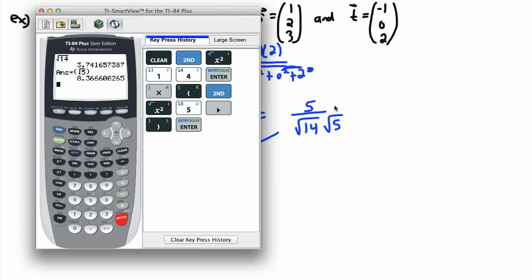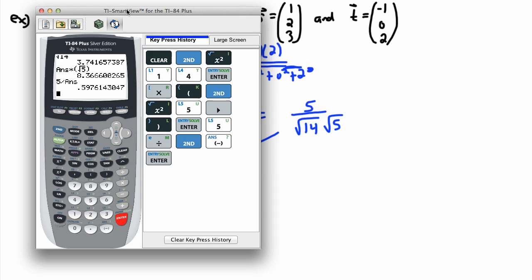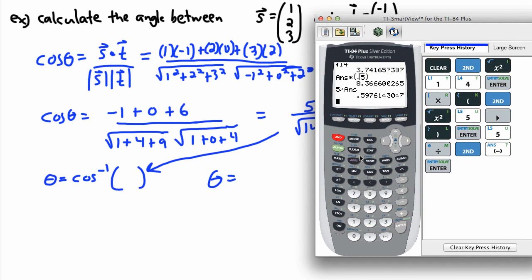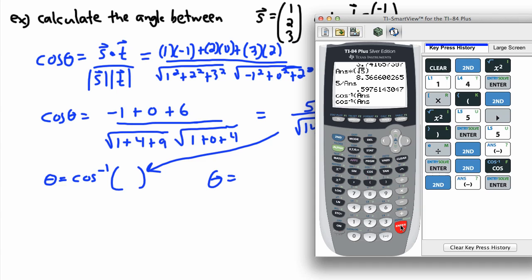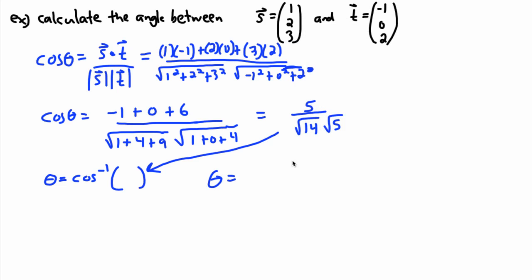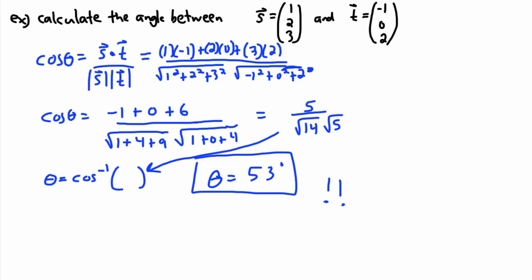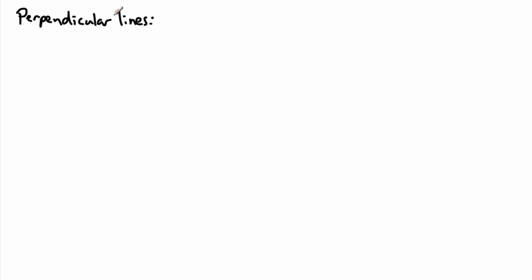The exact form would be inverse cos of that expression, but to actually get an angle we use the calculator. I do square root of 14 times square root of 5 for the denominator, then 5 divided by that, and take the inverse cosine — and I get 53.3 degrees, so pretty much 53 degrees. You can totally do these by just slowly working your way through the equation.